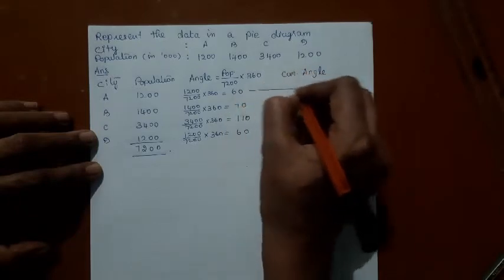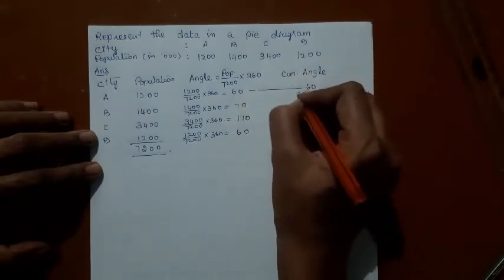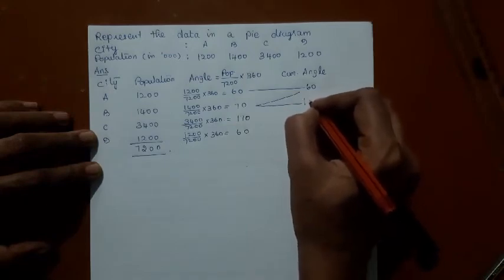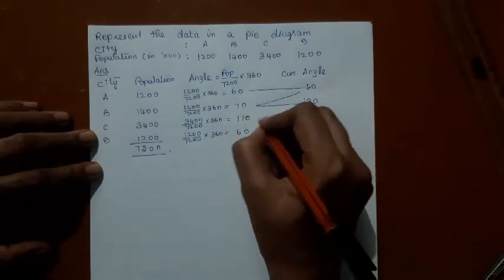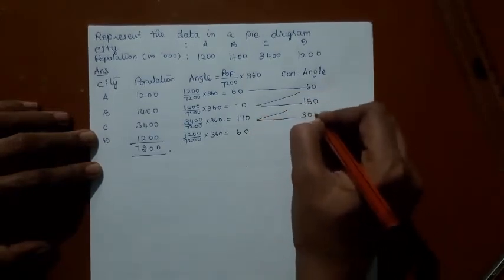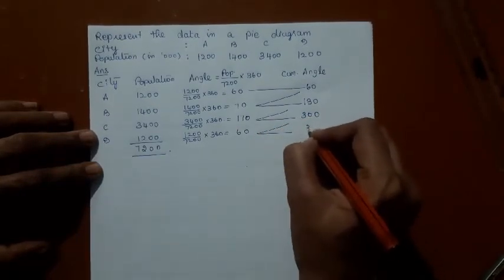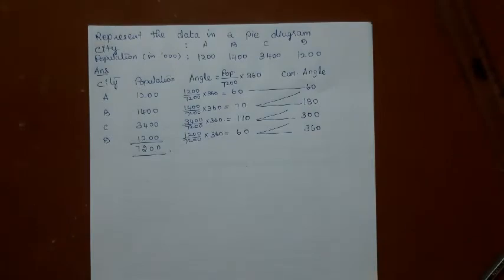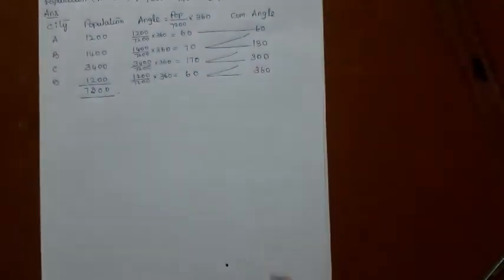I'm not going to use the protractor. Add these values; it should sum up to 360. Only then is your calculation correct. Now let us draw.